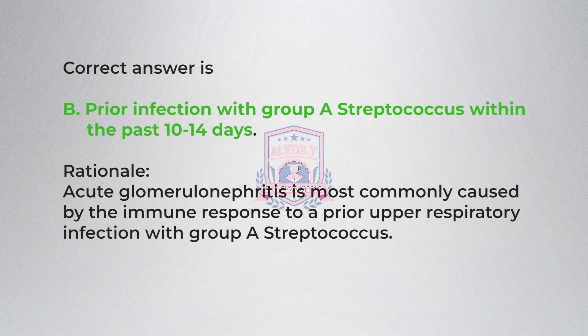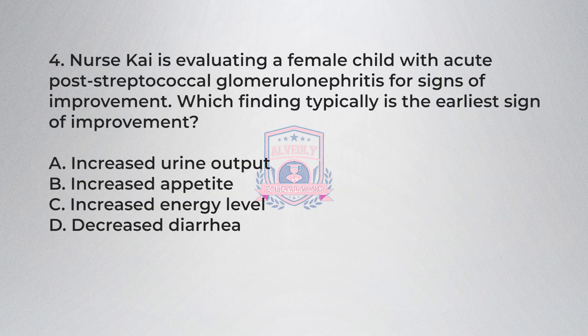Rationale: Acute glomerulonephritis is most commonly caused by the immune response to a prior upper respiratory infection with group A streptococcus.